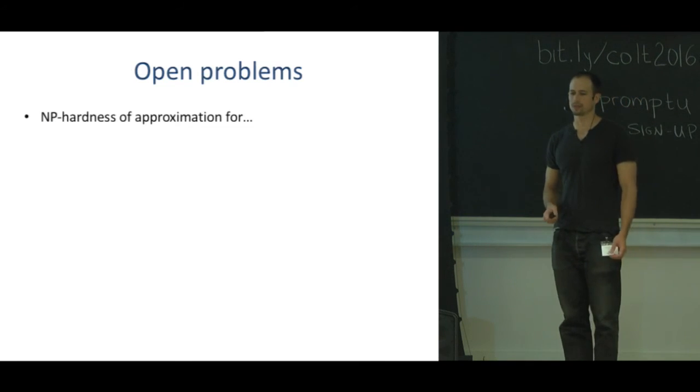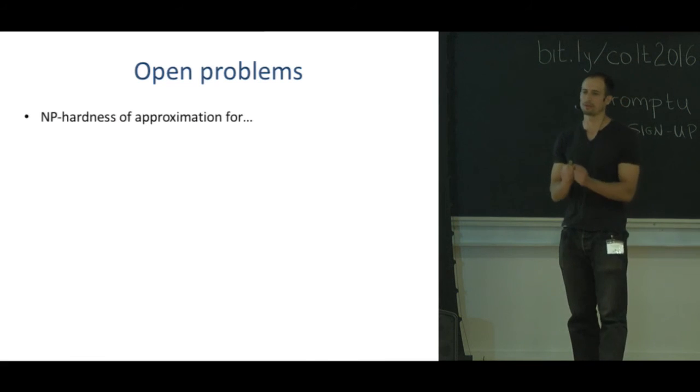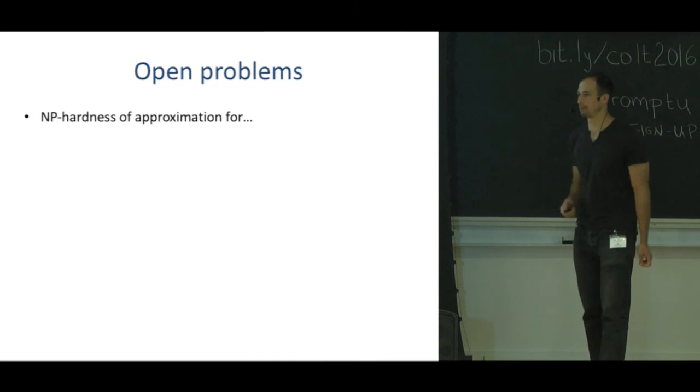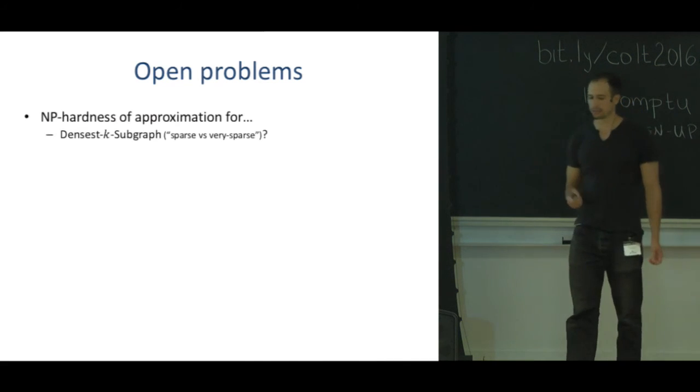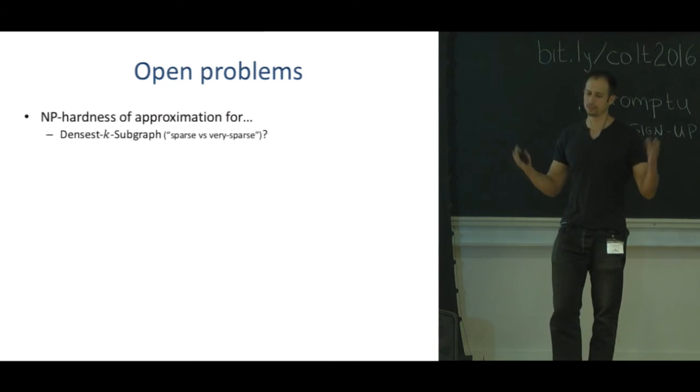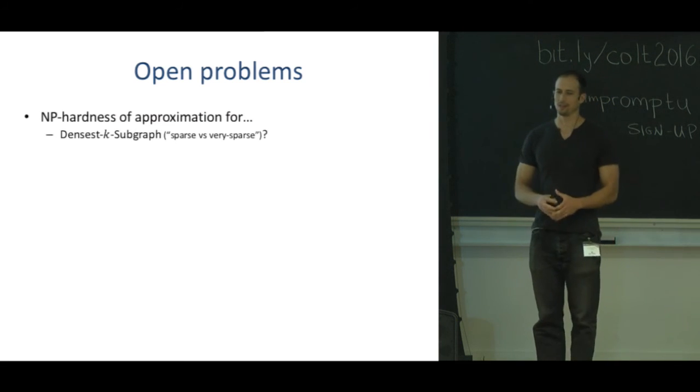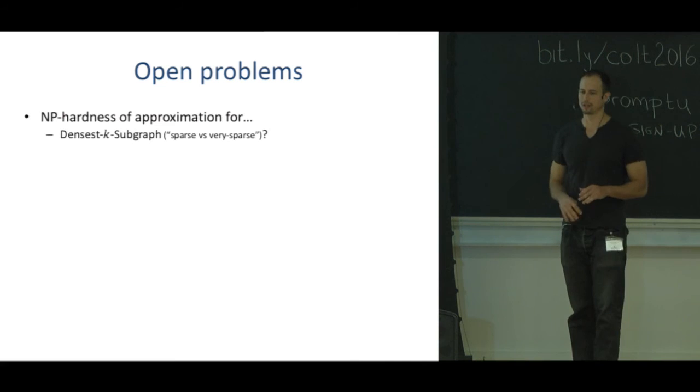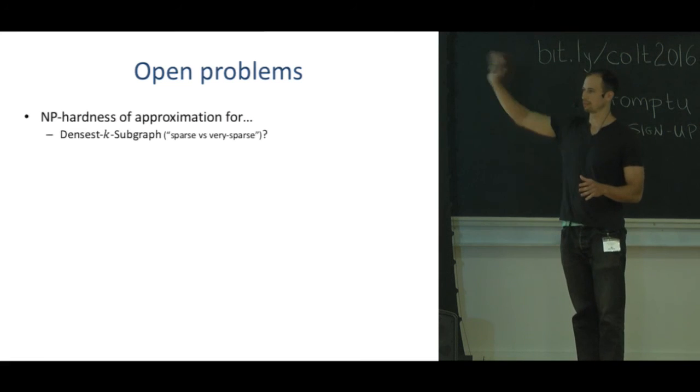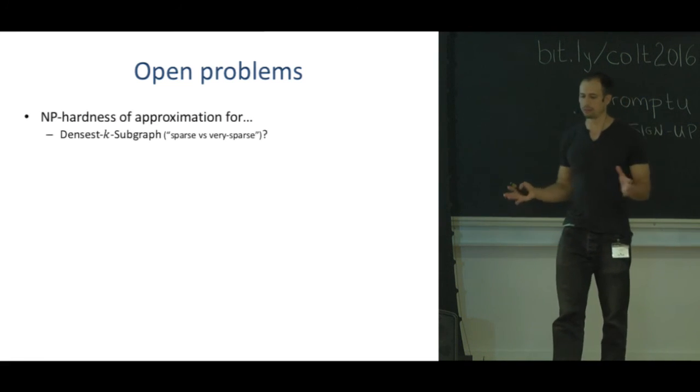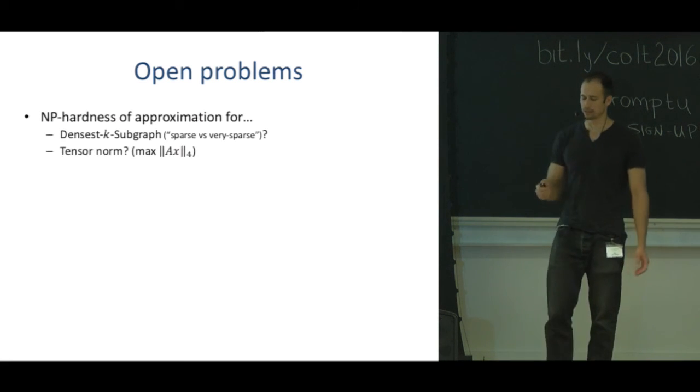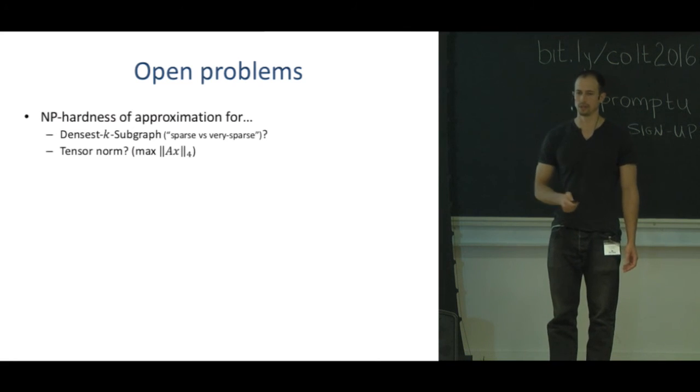Let me include some open problems. It would be really nice to get NP-hardness for even a tiny factor. For some very similar problems we don't know any NP-hardness. For example, there's densest k-subgraph—you're looking for the densest subgraph with k vertices. If you want to distinguish between a clique and something that's sparser, there's a quasi-polynomial time algorithm. But if you want to distinguish between something that's sparse and something that's very very sparse, that should be NP-hard but we don't know how to prove that. There's also this tensor norm problem that we don't know NP-hardness of approximation for.